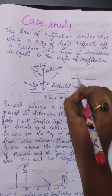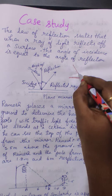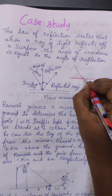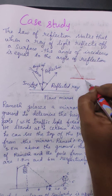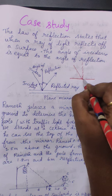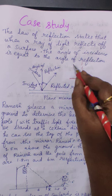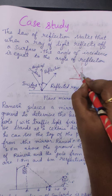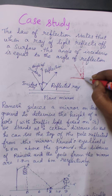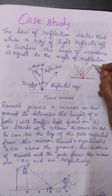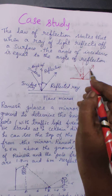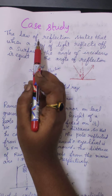Let us take the surface as a mirror. A ray is just hitting that mirror. When it hits the mirror, it will make an angle of incidence. This is called the incident ray. You will calculate the angle of incidence with the help of a perpendicular line. The angle between the perpendicular and the incident ray will be the angle of incidence, denoted as I.